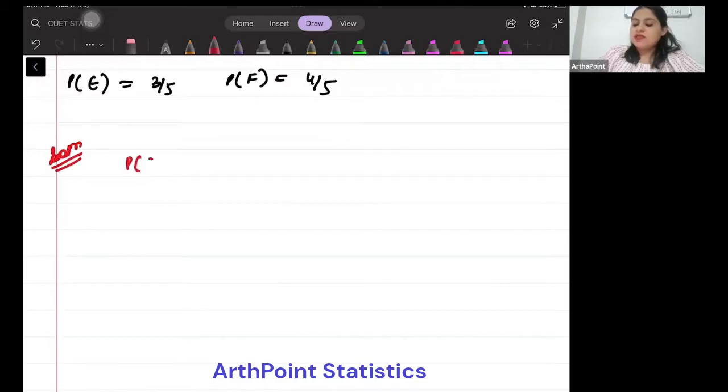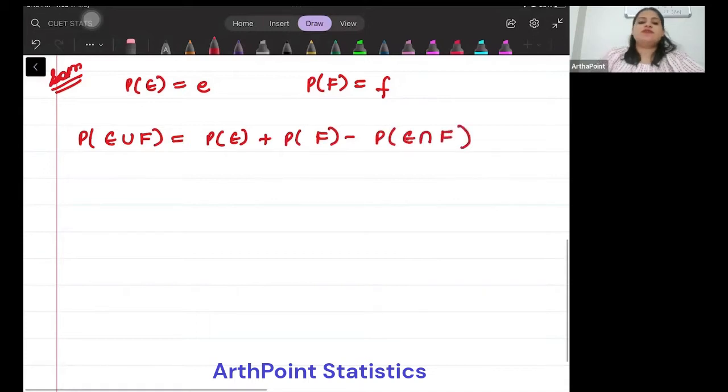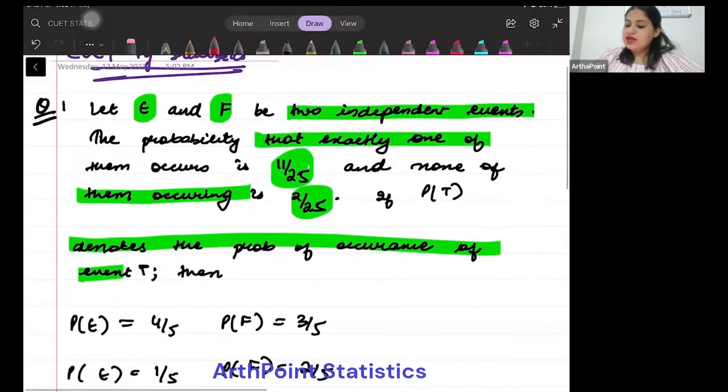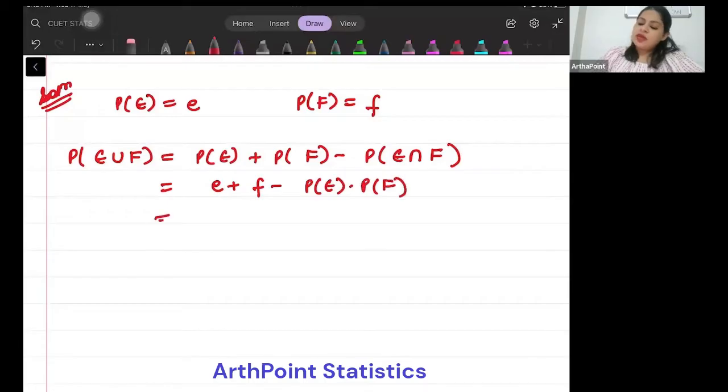Let's say that P of E is denoted by small e, P of F is denoted by small f. Can you tell me what will be probability of E union F? It will be probability of E plus probability of F minus probability of E intersection F. Since E and F are independent events, this will be E plus F minus E into F.